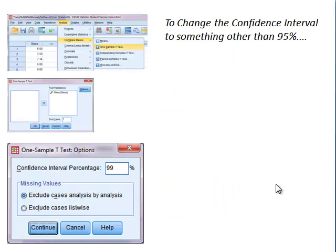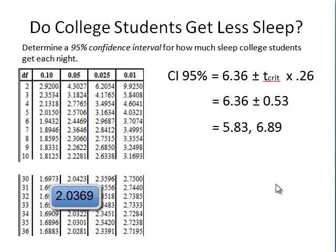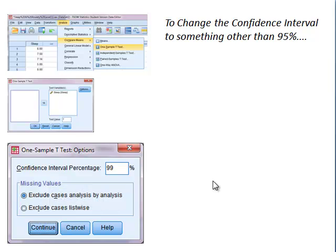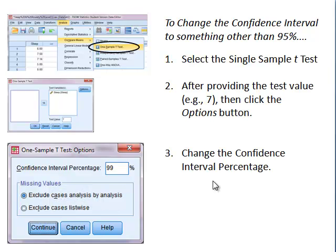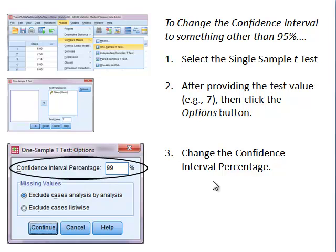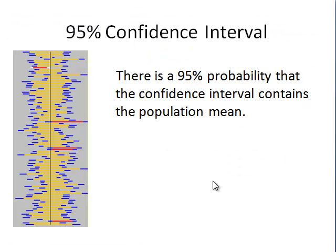If you wanted a different confidence interval, with the T table you would use an alpha of 0.01 for 99% or 0.1 for 90%. With SPSS, you select the single sample t-test, click Options in the dialog box, and enter the confidence interval percentage you're interested in, for example 99%. To recap: for a 95% confidence interval, there's a 95% probability it contains the population mean, keeping in mind approximately 5 out of every 100 will not.